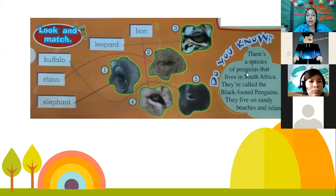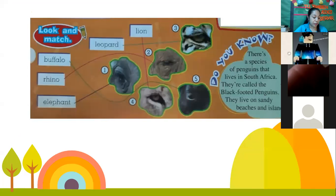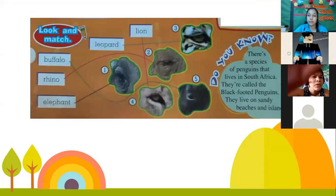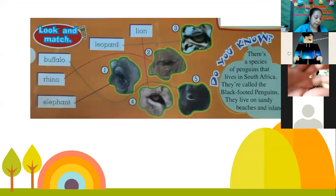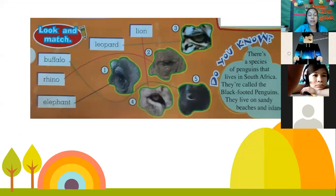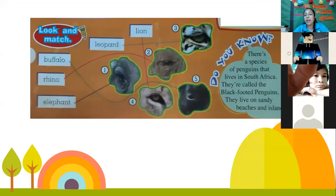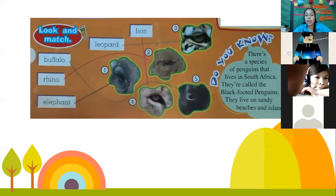Do you know there is a species of penguins that lives in South Africa? South Africa is a hot country, but there are some penguins that live there. They are called the black-footed penguins. They live on sandy beaches and islands. So penguins don't only live in Antarctica — they also live in South Africa, on sandy beaches and islands.